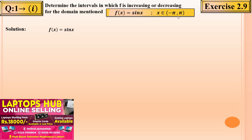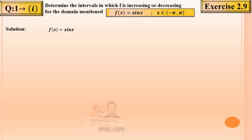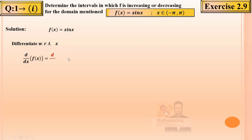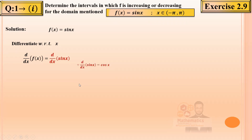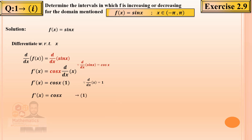To find the barrier points, we differentiate f(x) = sin x. Applying the operator d/dx, f'(x) = cos x. This is equation number 1. For the stationary point, set f'(x) = 0, so cos x = 0. From the calculator, cos inverse of 0 is 90 degrees, or in pi form: x = ±π/2. So the breaking points are at -π/2 and +π/2.